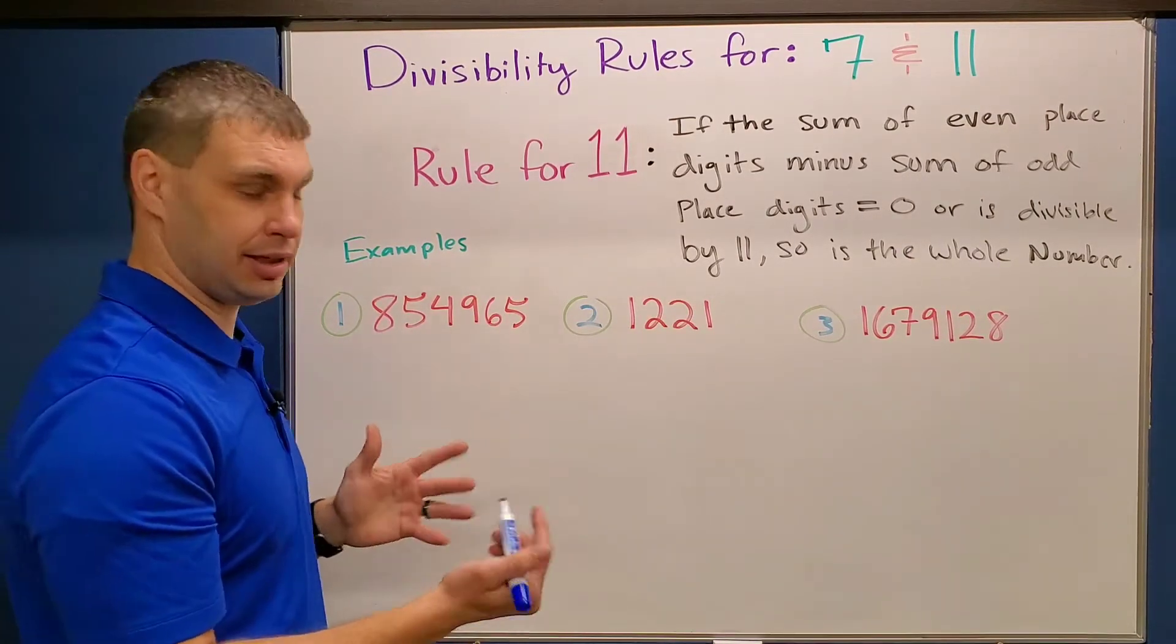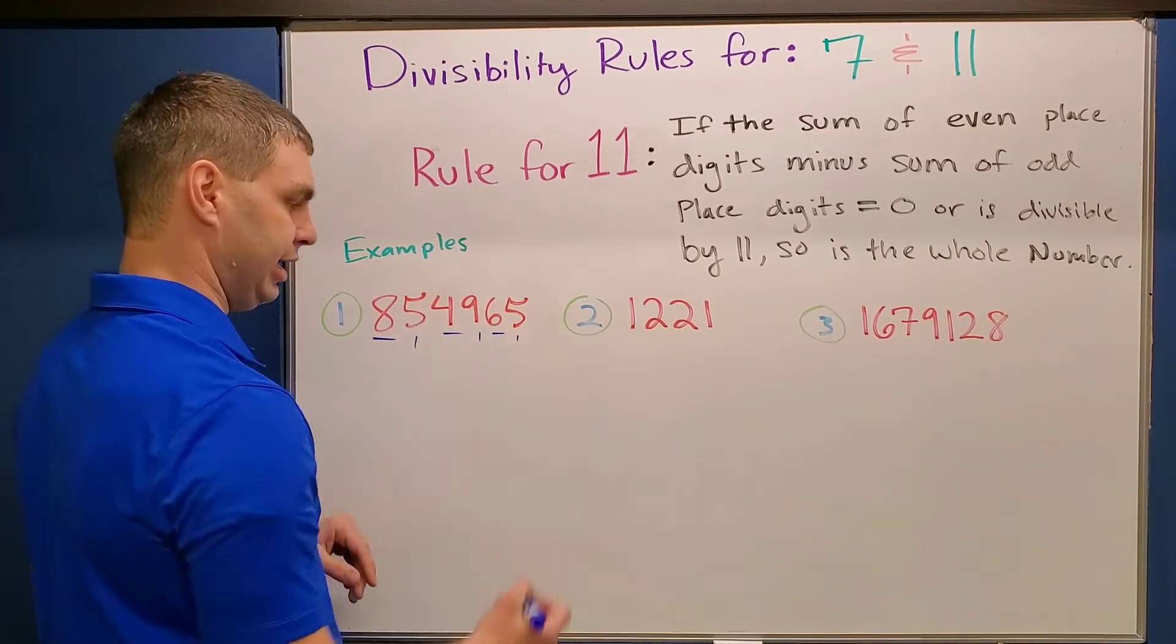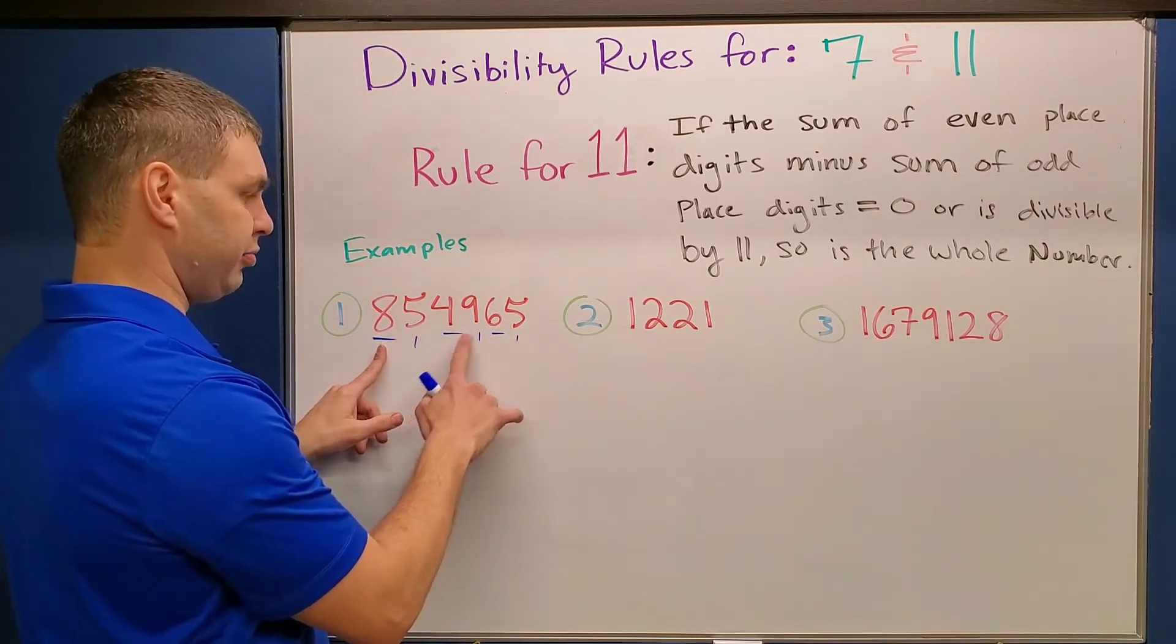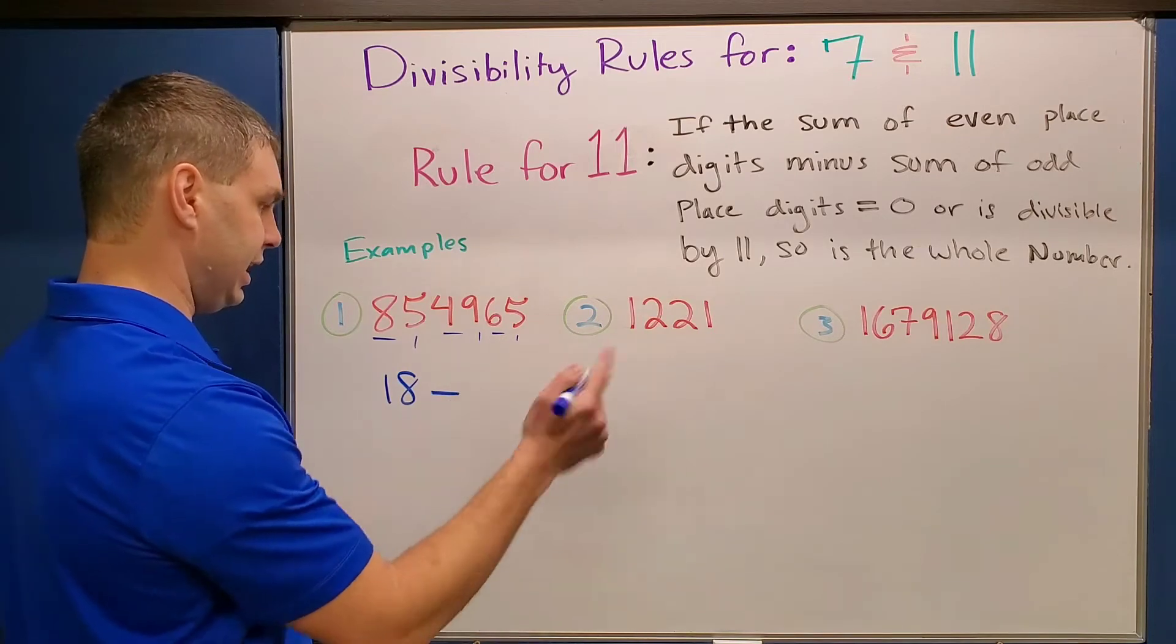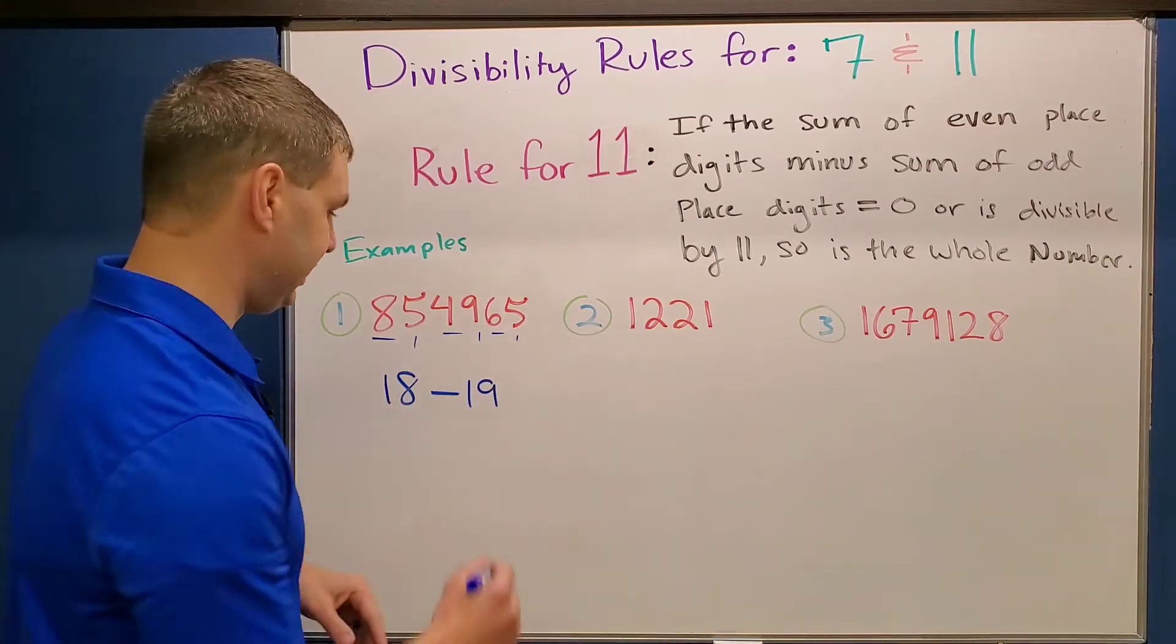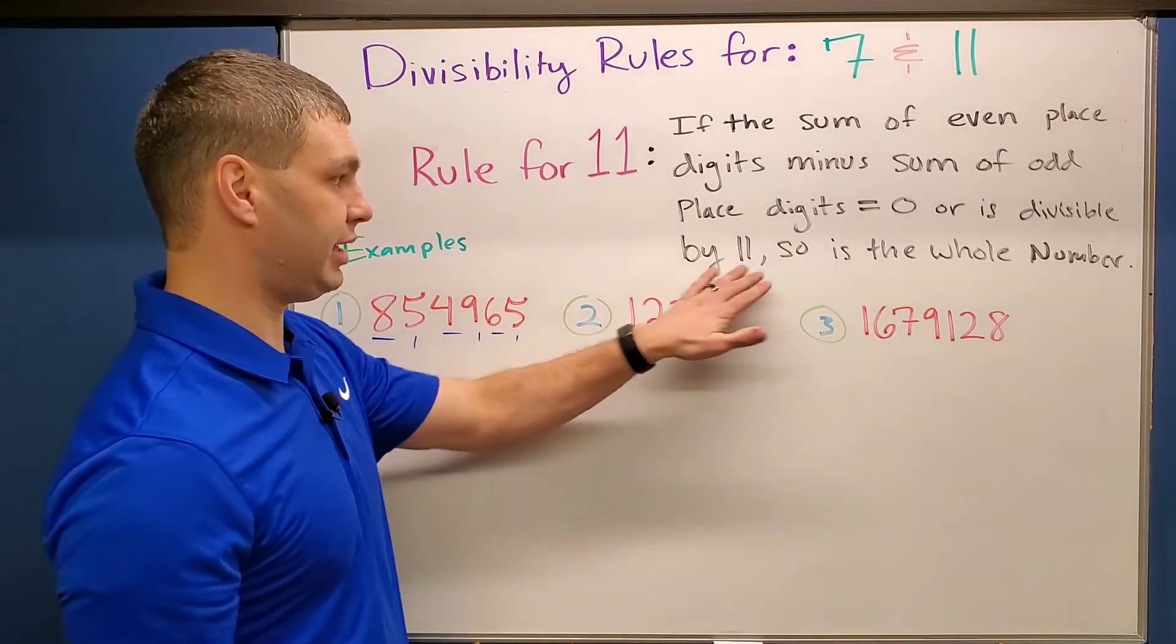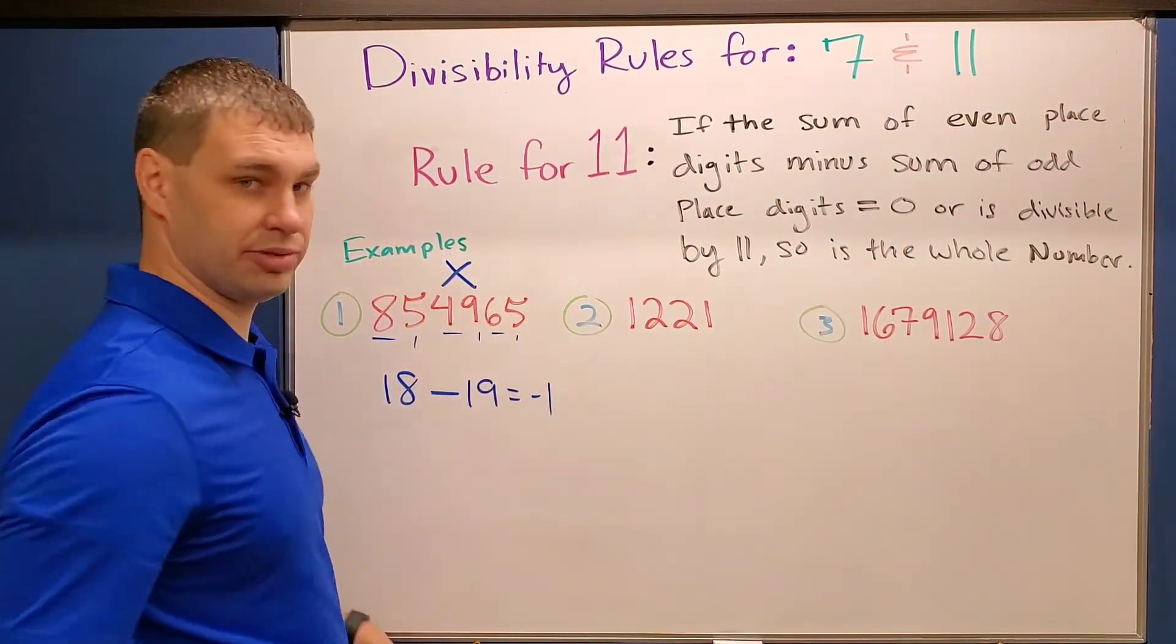1, 2, 3, 4, 5, 6. So this is going to be even, even, even, and then odd, odd, odd. So if I add up those even places, we have 8 plus 4 is 12 plus 6 is 18. So that's the evens minus the odds. Well, 5 and 5 is 10. 10 plus 9 is 19. 18 minus 19 gives you a negative 1. Negative 1 is not divisible by 11, and it's also not 0. So the whole thing is not going to be divisible by 11.